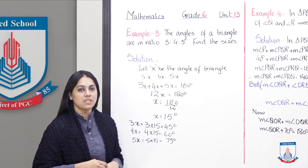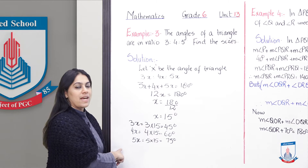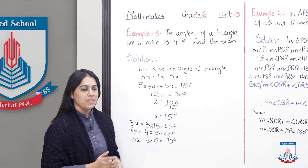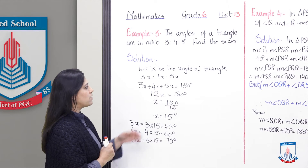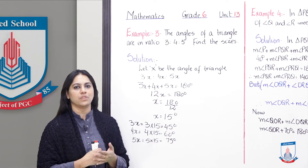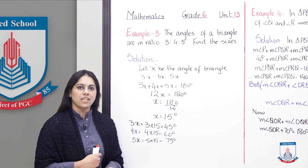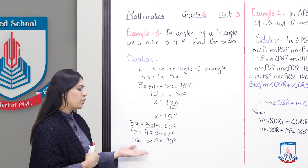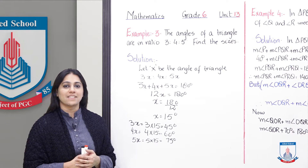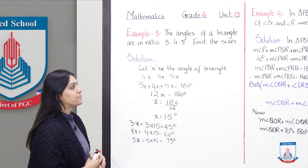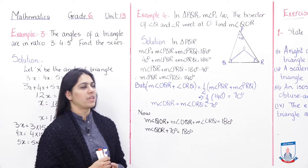With the help of x, we got all three angles of the triangle. What we did was assume x is the angle of the triangle, put it into the formula, and then found all three angles. Now let us move towards the next example — Example number 4.